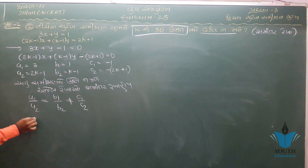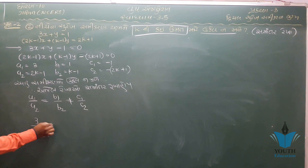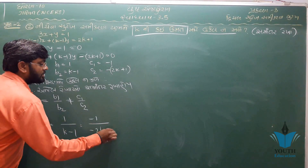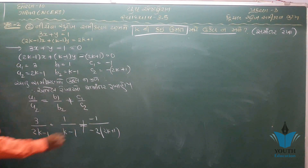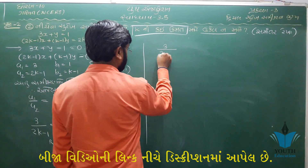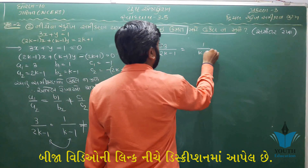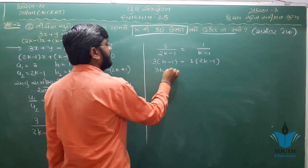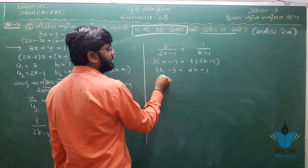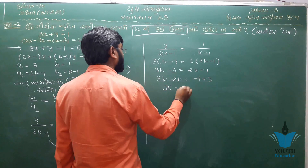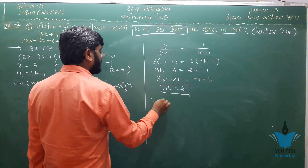k ની કિંમત શોધતાં — 2K equal to 2 — so K equal to 2.